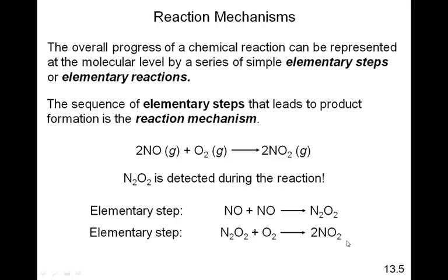Why talk about reaction mechanisms like this? It's going to affect the rate of the reaction. Because if a reaction is taking place in multiple steps, then obviously the reaction won't be going as quickly as it would be in a single step. Also, sometimes one step is faster and the other step might be slower. So if one step is faster and one step is slower, which step is the one that determines the rate? It is the slow step that determines the rate.